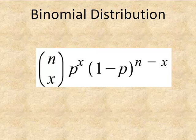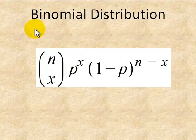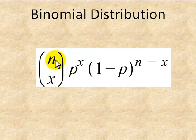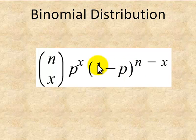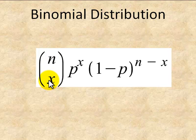In this tutorial, we'll show how to generate a binomial distribution. The binomial distribution is a discrete function where the function is equal to the combination of n things taken x at a time, times p to the x, times the quantity 1 minus p to the n minus x, where n is the number of trials, x is the number of successes, and p is the probability of success.